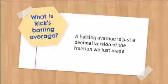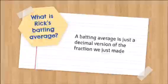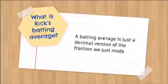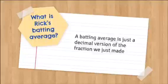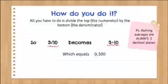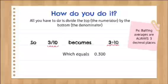So now that we have that fraction, we can figure out Rick's batting average. And the batting average is a super common statistic you see in baseball. Whenever you see a player's batting average, that means that that's the amount of balls a pitcher is most likely to hit if you pitch them 10. So how do you do it? All you have to do is divide the top, the numerator, by the bottom, the denominator.